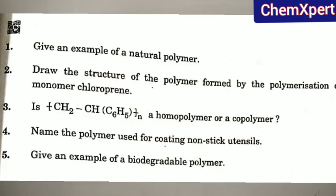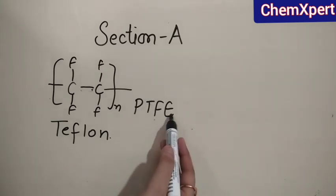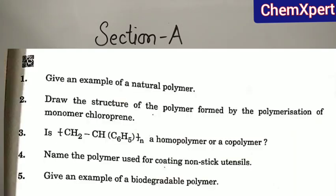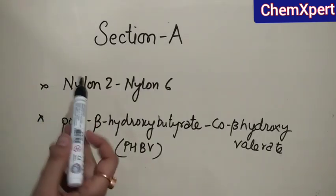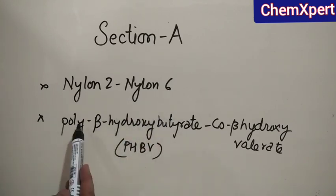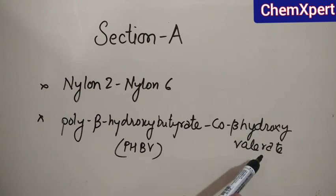The next question is: name the polymer used for coating of nonstick utensils. The answer is Teflon, or PTFE, which is also known as polytetrafluoroethylene. The next question asks: give an example of a biodegradable polymer. The answer can be Nylon-6 or PHBV, that is poly-beta-hydroxybutyrate-co-beta-hydroxyvalerate.